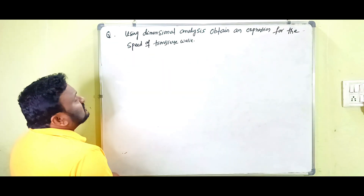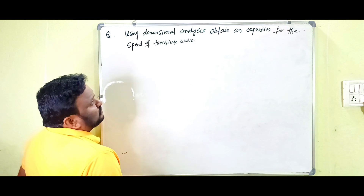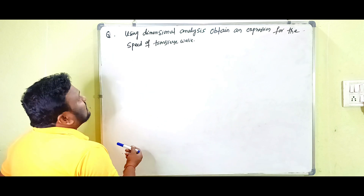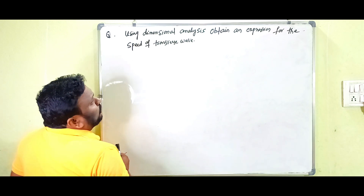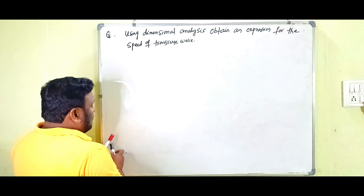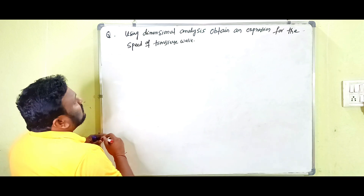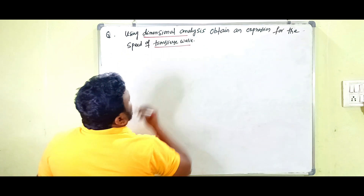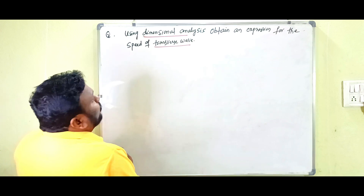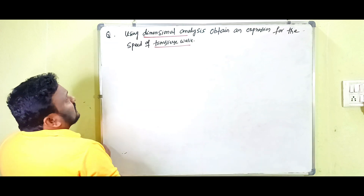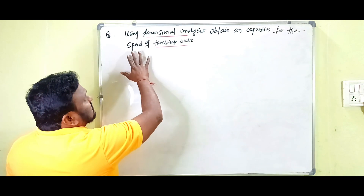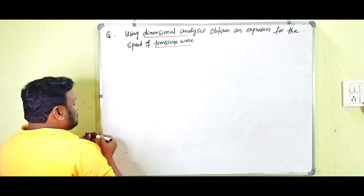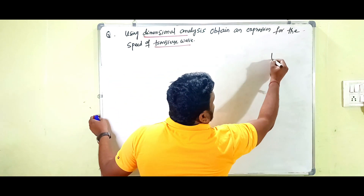Let's go for the question: using dimensional analysis, obtain an expression for the speed of transverse wave. So by using dimensional analysis, we have to find out the expression for transverse wave speed.